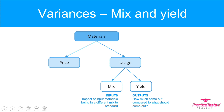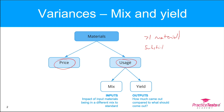Traditionally we would calculate variances for materials based on price and usage. Now if there are more than one material input into a process and there is an element of substitutability between those products, then we can consider mix and yield variances.